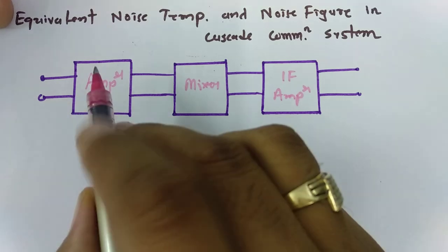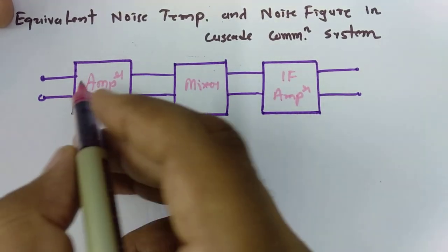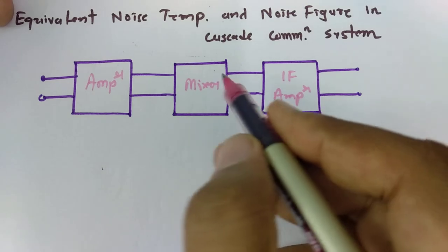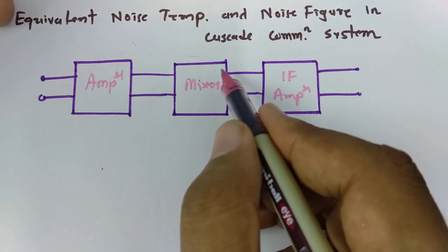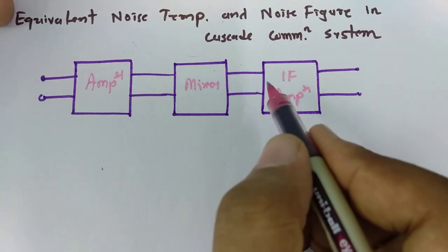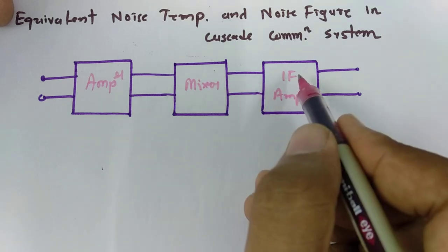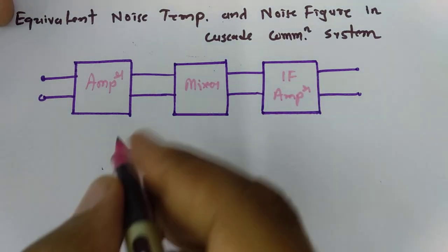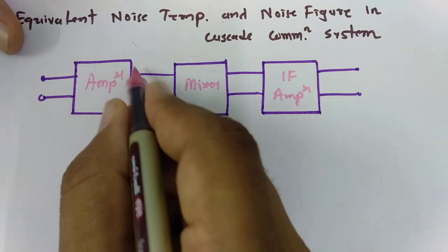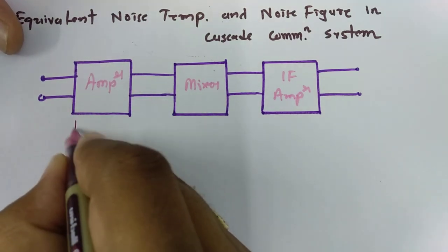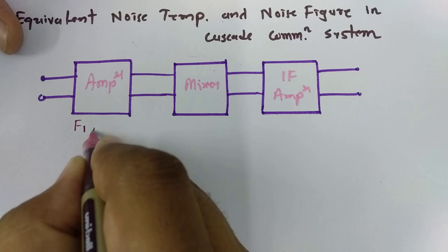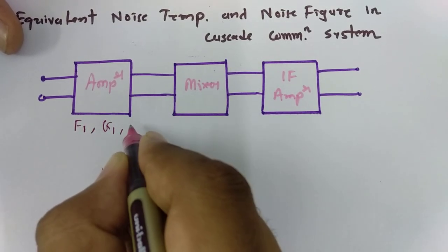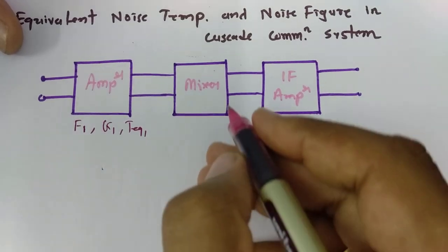For example, we have a communication system where an input signal passes through an amplifier, then through a second block which is a mixer, and then through an IF amplifier as the third block. The amplifier block has noise figure F1, gain G1, and equivalent noise temperature T-equivalent-1.